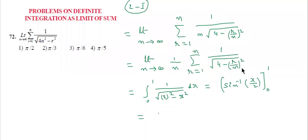Substitute upper limit, you will get sine inverse of 1 by 2. Lower limit sine inverse of 0. What is sine inverse of 1 by 2? 30 degrees, that is pi by 6. Minus sine inverse of 0. So finally answer is pi by 6. So third option is correct.